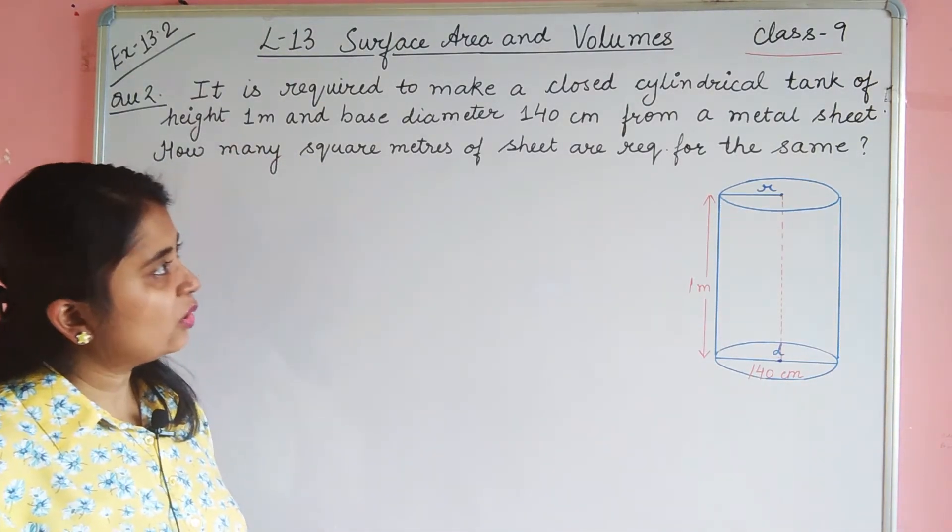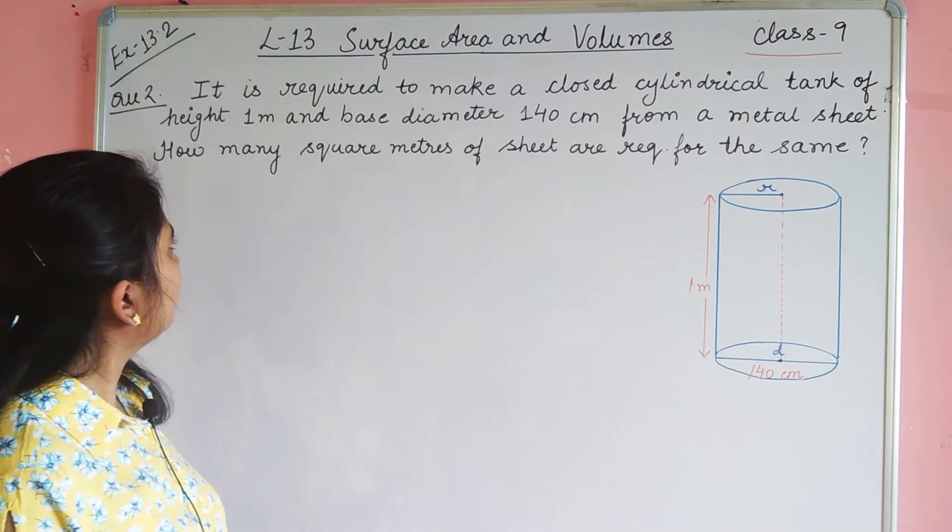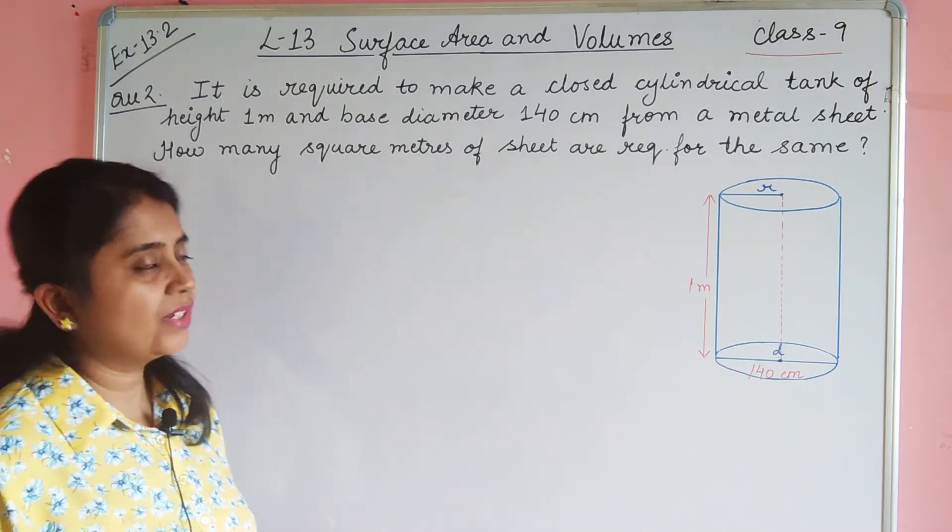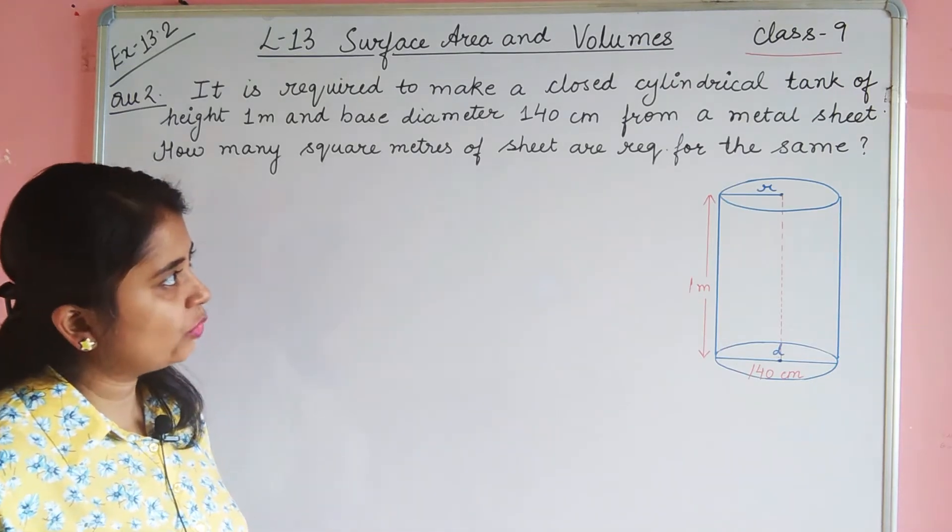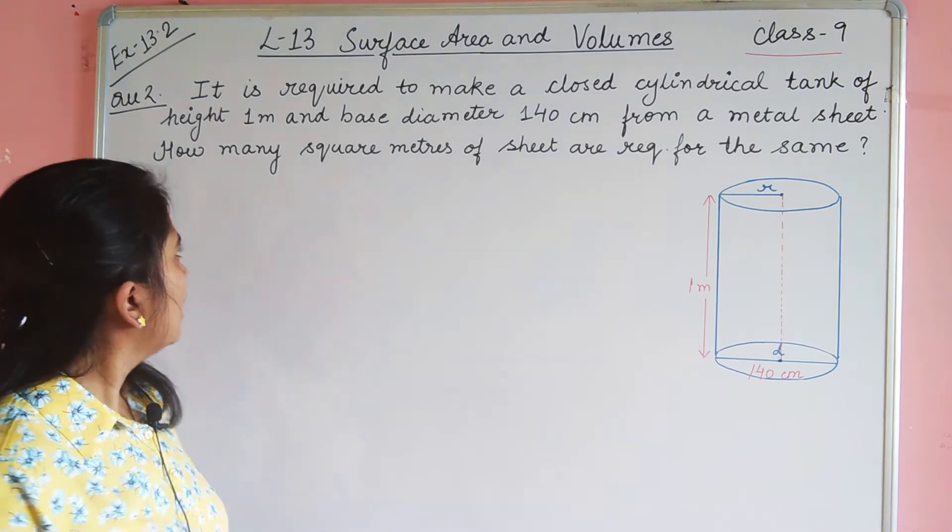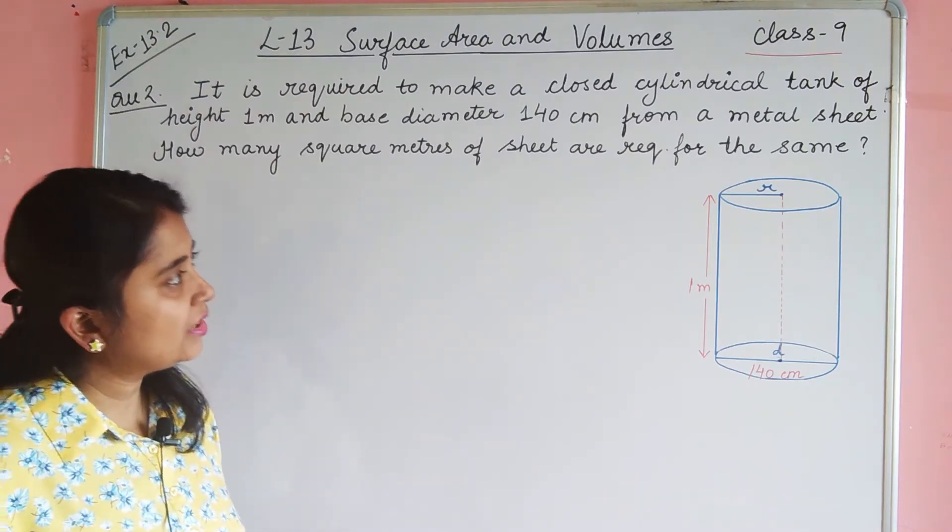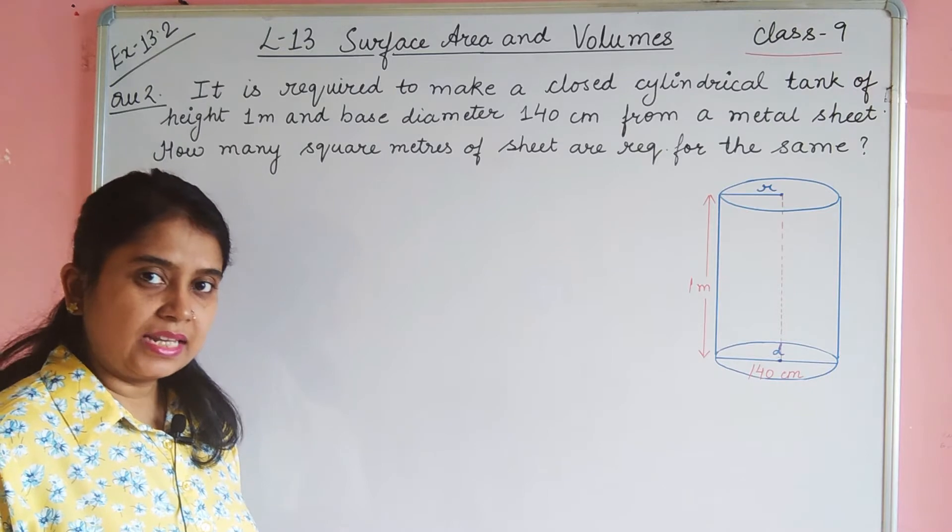This is Priyanka with another set of questions from exercise 13.2, class 9. It is required to make a closed cylindrical tank of height 1 meter and base diameter 140 cm from a metal sheet. How many square meters of sheet are required for the same?